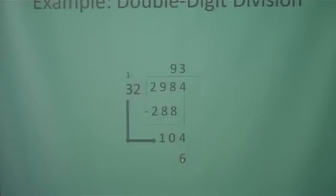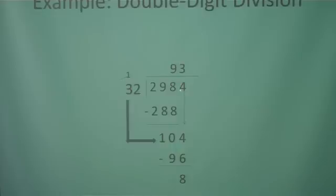3 times the 1s digit of 2 is 6. Now we're going to multiply by the 10s place: 3 times 3 is 9. When you subtract, you get 8. Since 8 is less than 32, we know that 3 was a good estimate. There's no more to bring down, so our final answer is 93 remainder 8.